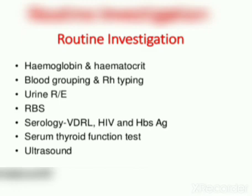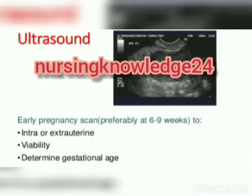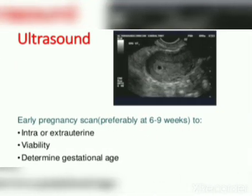Routine investigations include: hemoglobin check, blood group and Rh typing, urine analysis, random blood sugar (RBS), serology including VDRL and HBsAg, serum thyroid function test, and ultrasound. Ultrasound includes an early pregnancy scan and the trifelli scan at around 60 days.